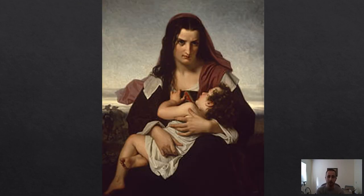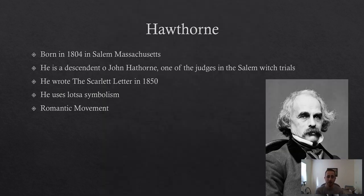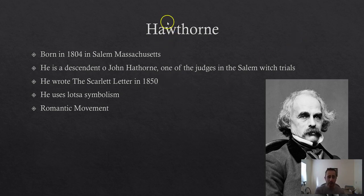So the book we're reading is The Scarlet Letter by Nathaniel Hawthorne. As you can see, Hawthorne was born in 1804 in Salem, Massachusetts. He's actually a descendant of John Hawthorne, one of the judges during the Salem Witch Trials. Because of his background and heritage, Hawthorne actually added a W to his name to differentiate himself from his grandfather. He wrote The Scarlet Letter — completed it in 1850. It only took him about a year to write; he started in 1849 and finished pretty quickly.